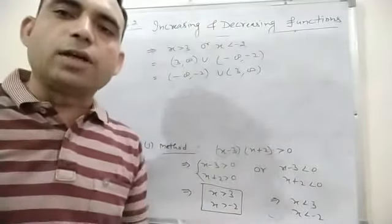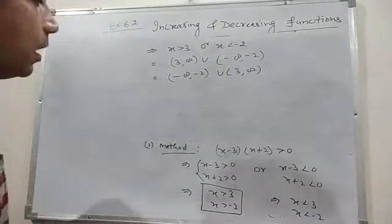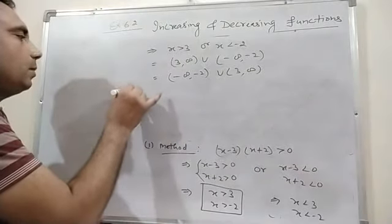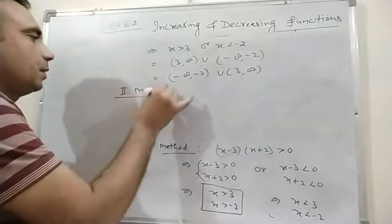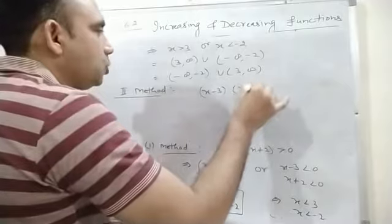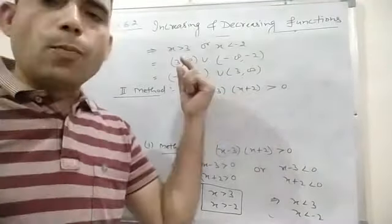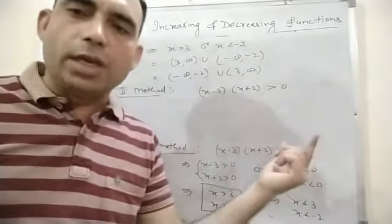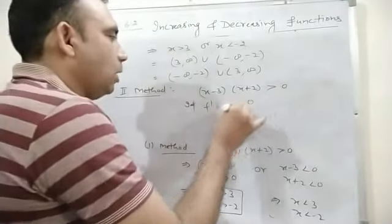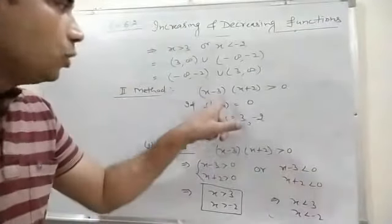Now the second and easier method. Method 2: from (x - 3)(x + 2) > 0, set each factor equal to zero to find the points where the real line is divided into intervals. If f'(x) = 0, then x = 3 and x = -2. These are the points where the real line breaks into intervals.